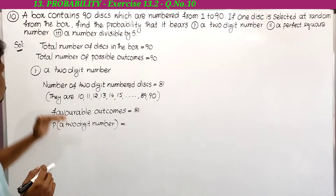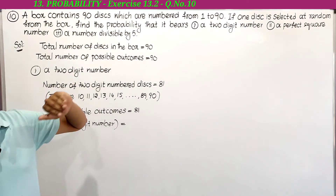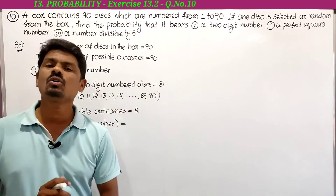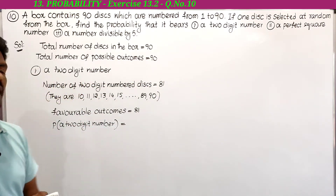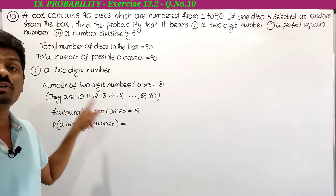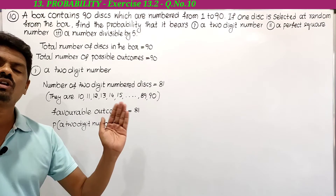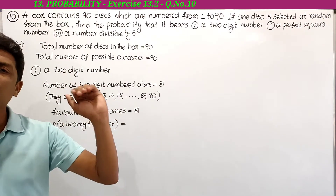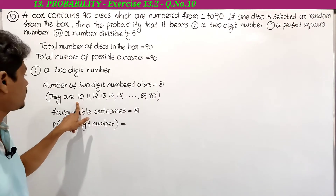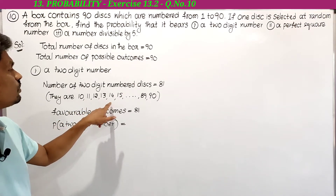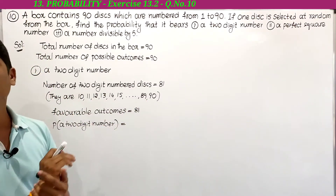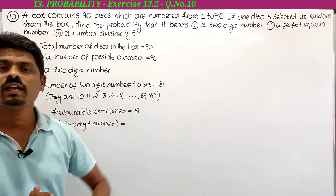First one: a two-digit number. The number of two-digit numbered discs is equal to 81. The one-digit numbers are 1 through 9, and two-digit numbers start from 10, running from 10, 11, 12, 13, 14, 15 up to 90.